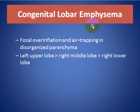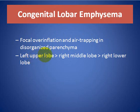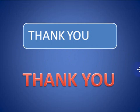Congenital lobar emphysema is focal overinflation and air trapping in disorganized parenchyma, most commonly affecting the left upper lobe, followed by the right middle lobe and right lower lobe. Thank you for listening — hoping to see you soon in another talk.